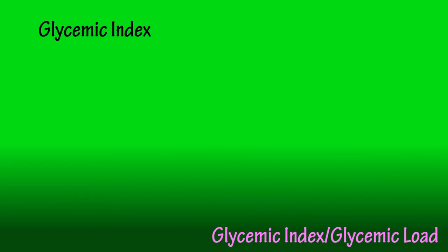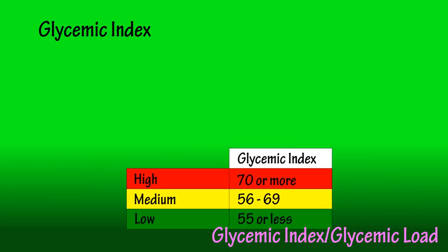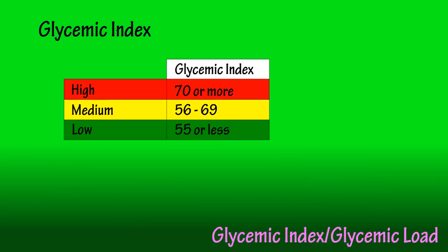Most organizations use a high, medium, and low rating scale. Carbohydrates with a glycemic index value of 55 or less are rated as low. A medium value lies between 56 and 69, and a high value is 70 or more.